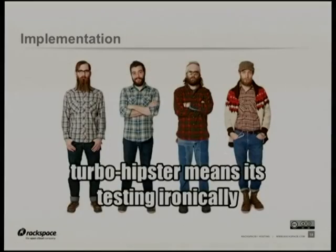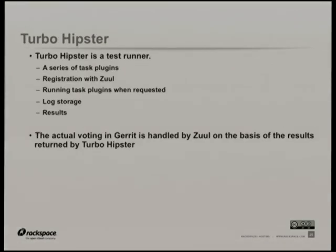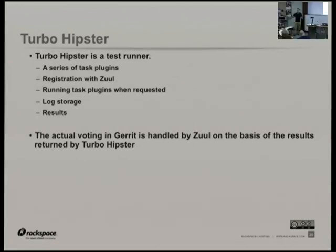Turbo Hipster — of course — means it's testing ironically, which we thought was a hilarious name because most of the infra team are hipsters. Turbo Hipster is a test runner. These task plugins register things they can do; Turbo Hipster reports those to Zuul. Zuul has a config file that says, for this event, execute this thing in this queue — you can have more than one queue, though in reality we only have one at the moment. Task plugins are run when they're requested; logs are stored and you return results. The actual voting in Gerrit is handled by Zuul — you just send a data packet back.